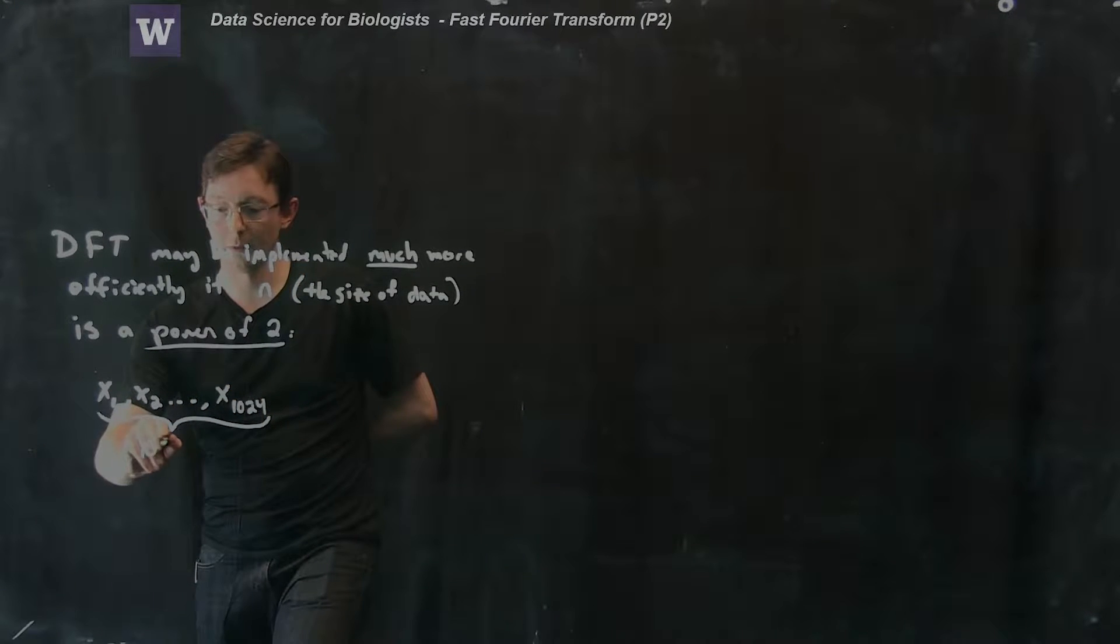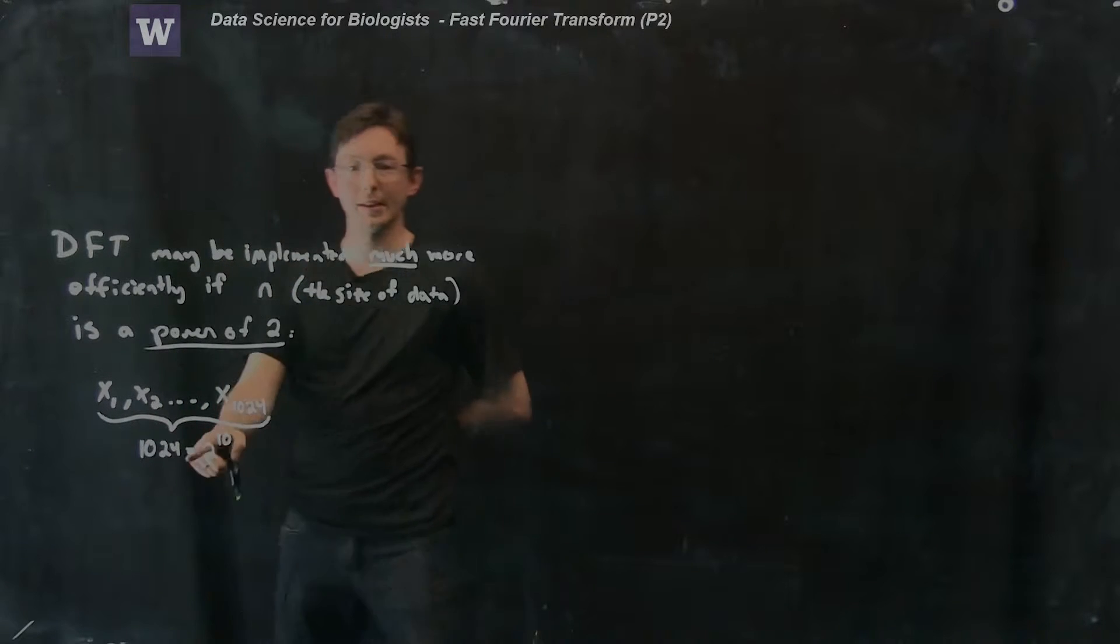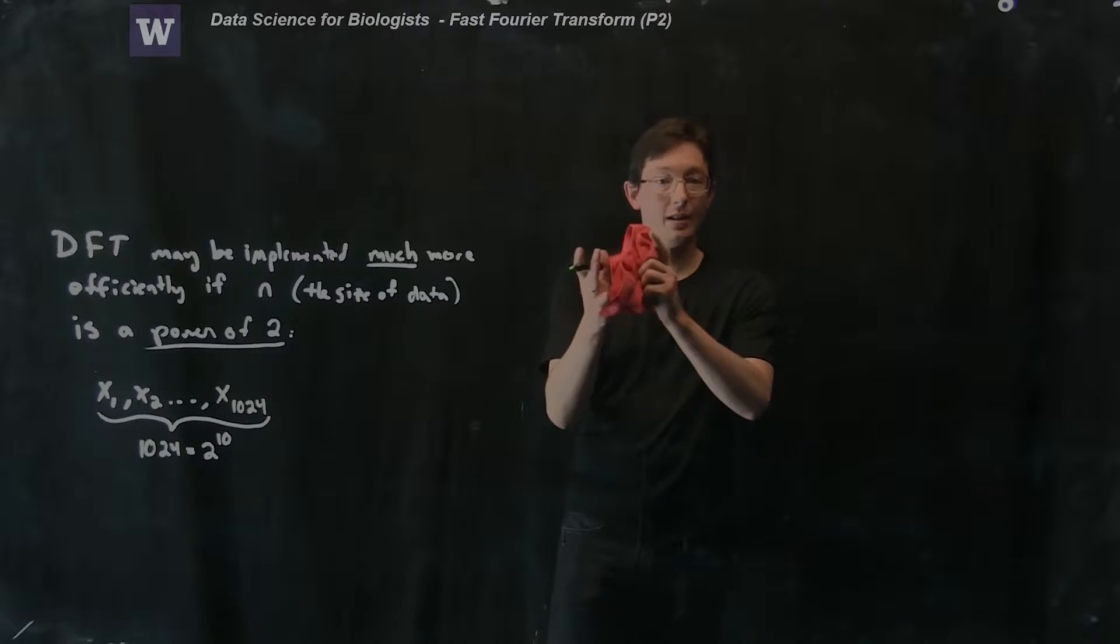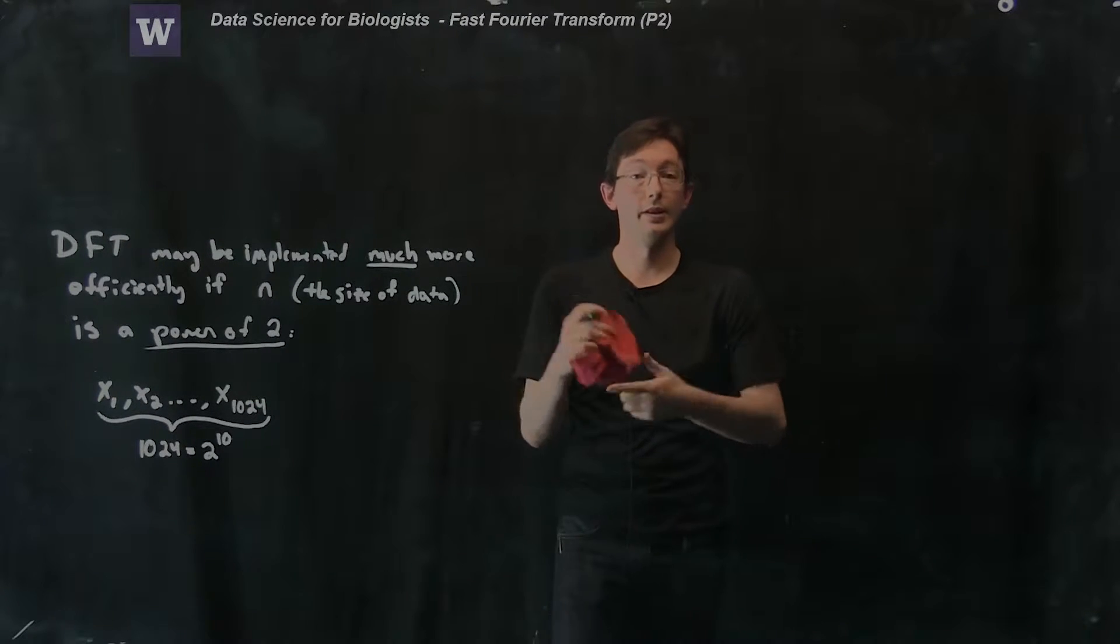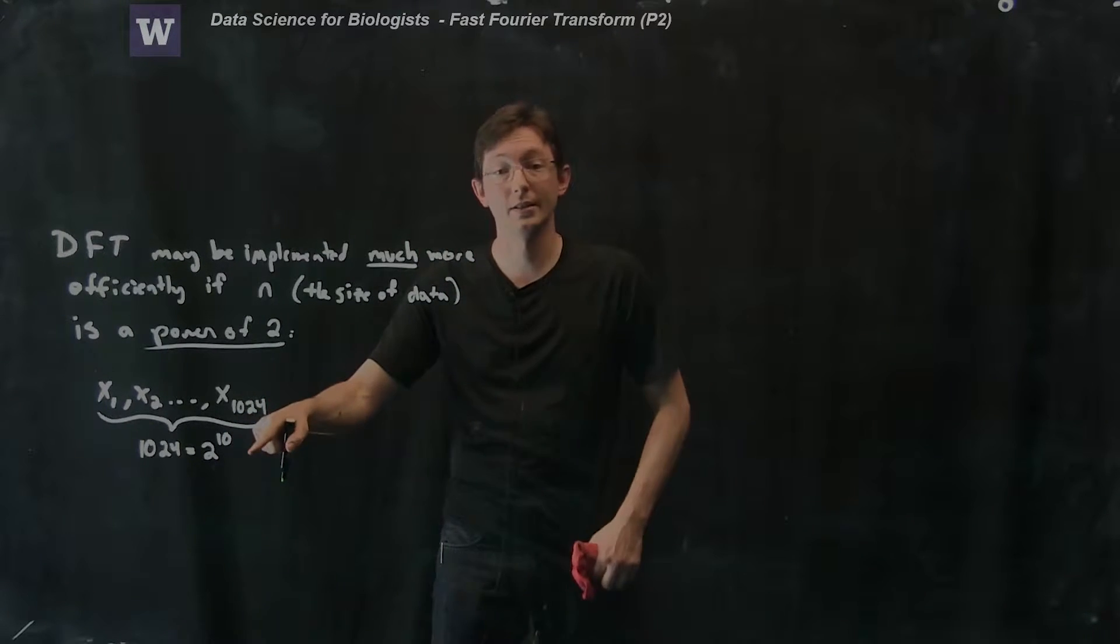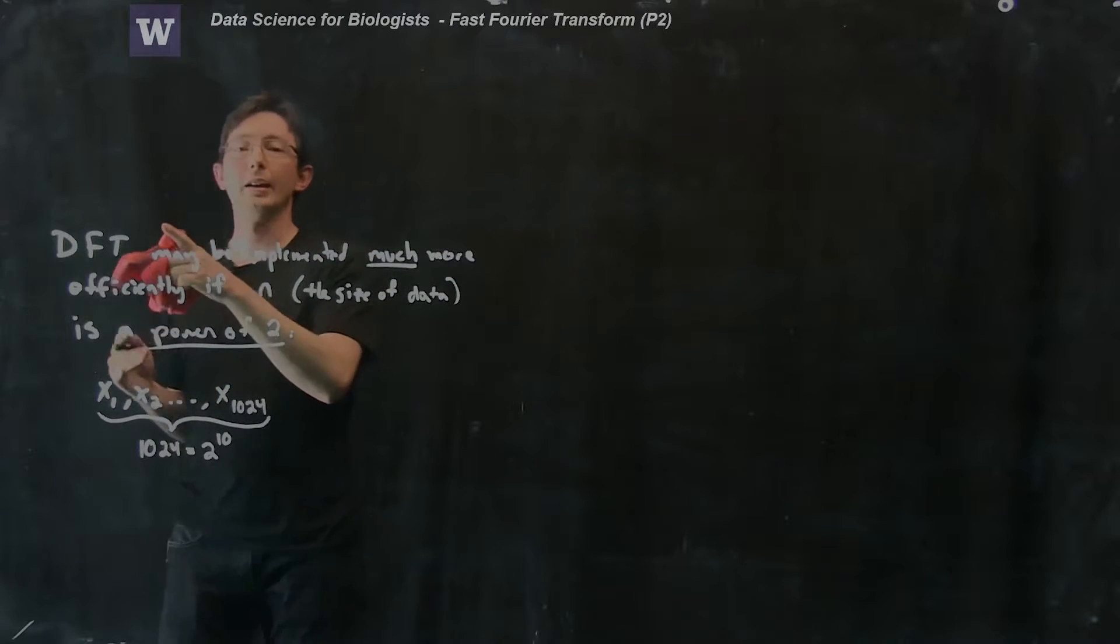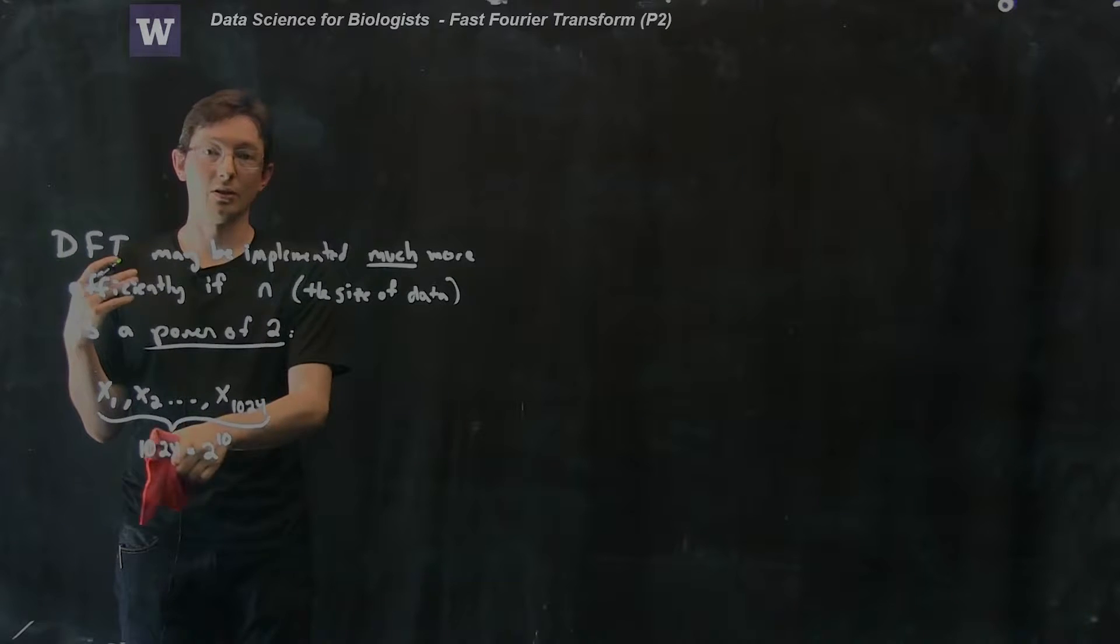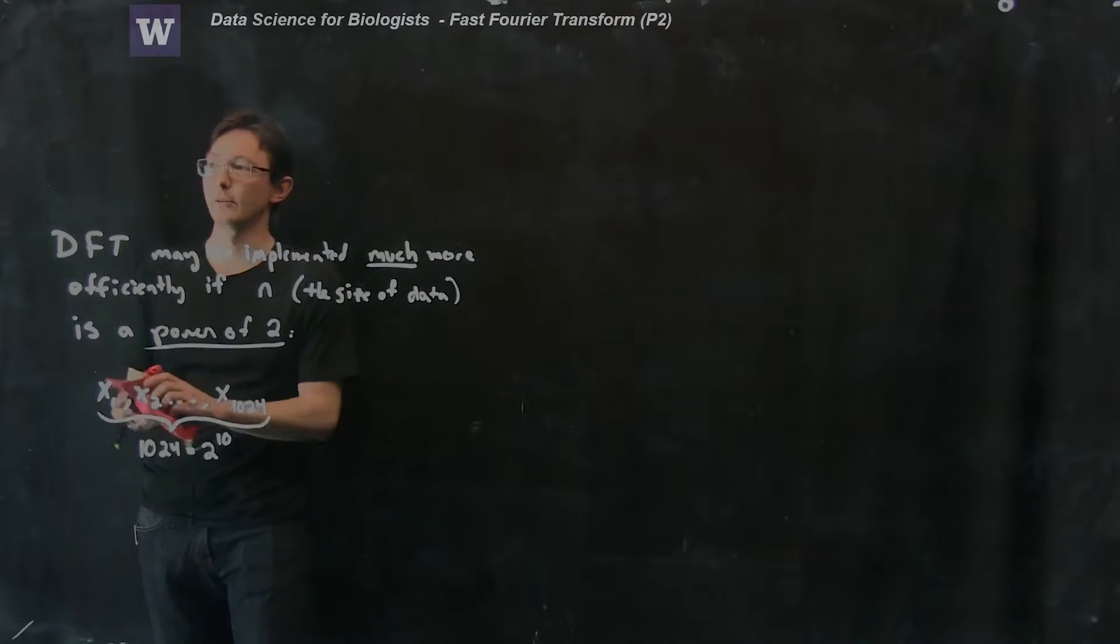This is 1024 equals 2 to the power 10 entries. Let's say that I have 1024 entries of data that I'm going to be doing the discrete Fourier transform on. Then I'm going to be able to do this DFT much more efficiently than if I had 1023 or 1025.